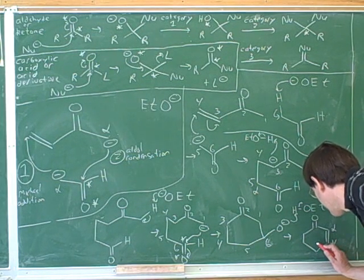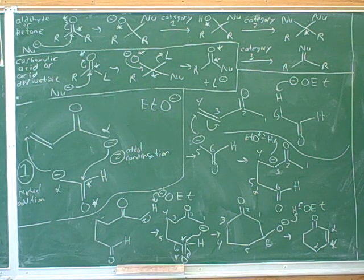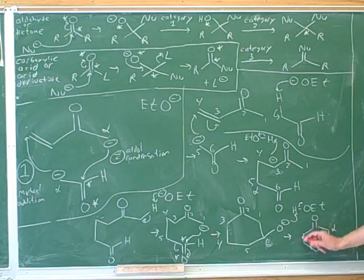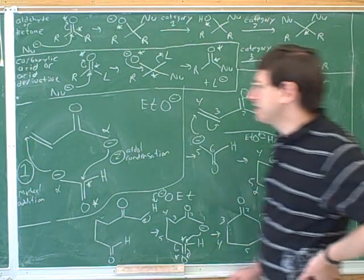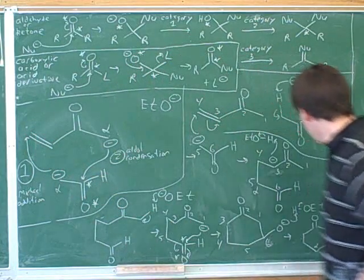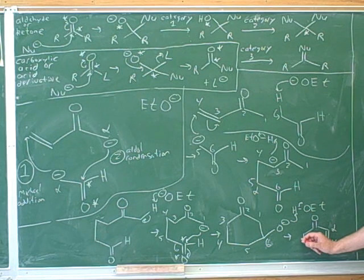So let's label that again. And where's the atom that it attacked? This must be the atom that was attacked in the Michael addition. So how did this look different before the Michael addition? This used to be unsaturated. Remember that in the Michael addition, you have to attack an alpha-beta unsaturated — so this bond over here used to be a double bond before the alpha carbon attacked over here.